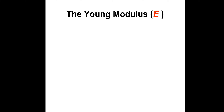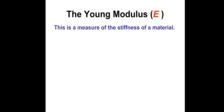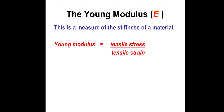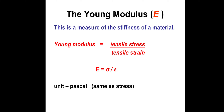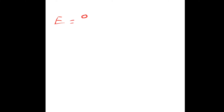Young's modulus E is the measure of the stiffness of a material. It is given by tensile stress divided by tensile strain: E equals sigma divided by epsilon, or stress over strain. The unit — since stress is in pascals and strain has no units — is still pascals, the same as stress.